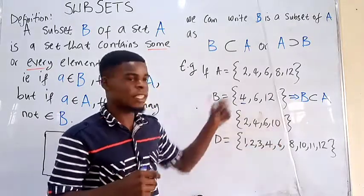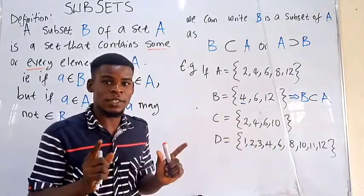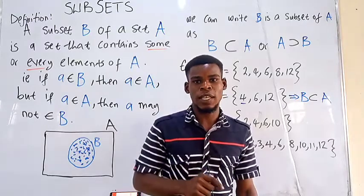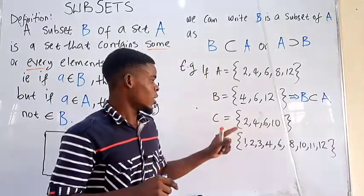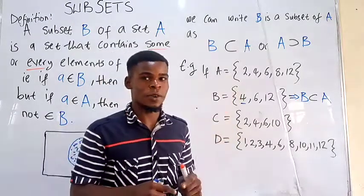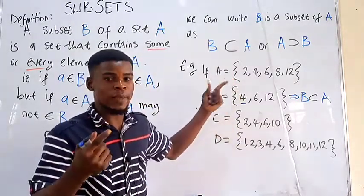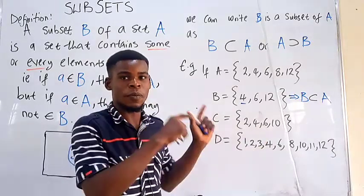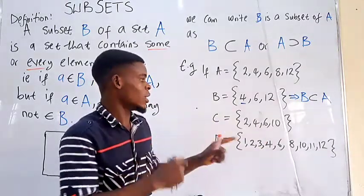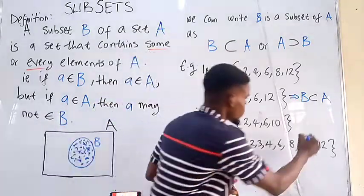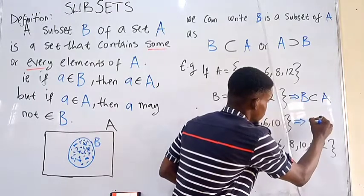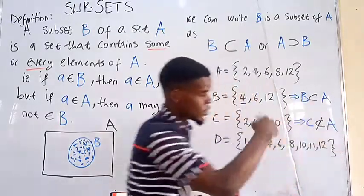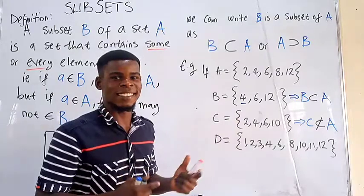Now, look, 10 is in C, but 10 is not in A, so that means that C is not a subset of A, because C does not lie entirely inside A. There is an element that is out of A, so that external element makes C not to be a subset of A, even though A contains more elements than the set C. But since C contains other elements which are not in A, then C is not a subset of A. So we can write that as C is not a subset of A. So we just write a subset, then you now cross it to show that you destroy this.